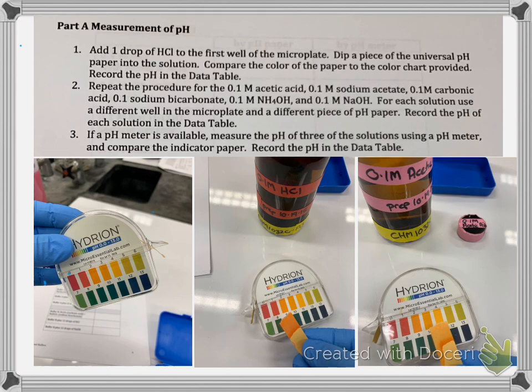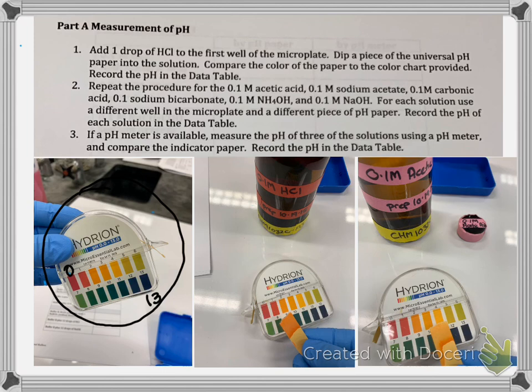You might be familiar with pH paper if you have a swimming pool, for example. In this first picture, I have the pH paper and it has the scale. On the scale, it starts at a pH of 0 and goes to a pH of 13.